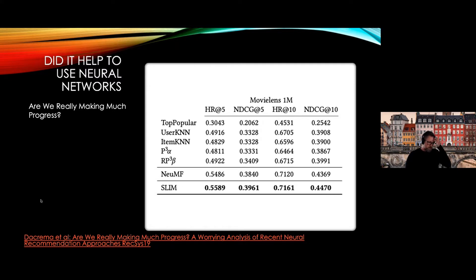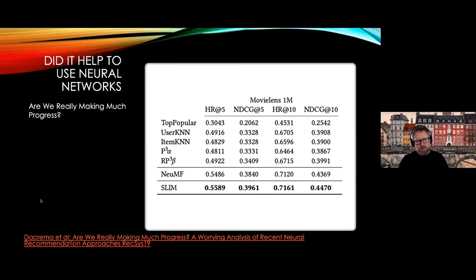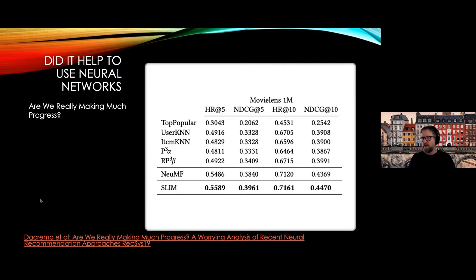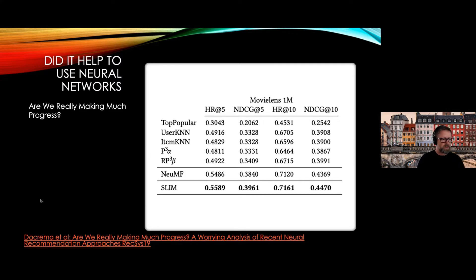Some of you might ask why not just use neural networks or deep learning from the beginning. The reason I stick to matrix factorization is that a 2019 paper from the RecSys conference showed that many neural networks claimed to be state-of-the-art could actually be beaten by much simpler algorithms like item nearest neighbors. So stick with the old ones first — start with matrix factorization, then progress to more complicated approaches if needed.